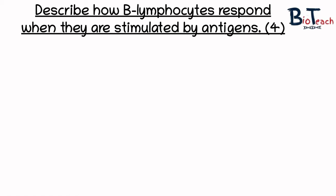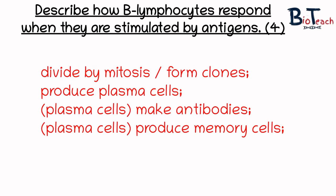For four marks you need to make four key points. Since the B-cell has already been stimulated, talk about how they divide by mitosis or that they form clones. The next point is that plasma cells are formed which then make antibodies. You should also say that plasma cells produce memory cells which stay in the bloodstream for longer periods of time.